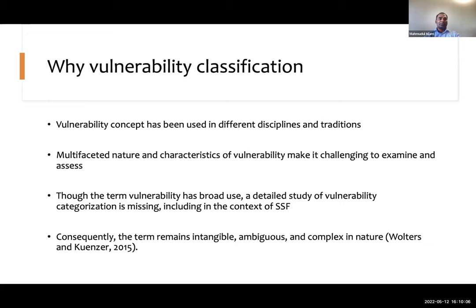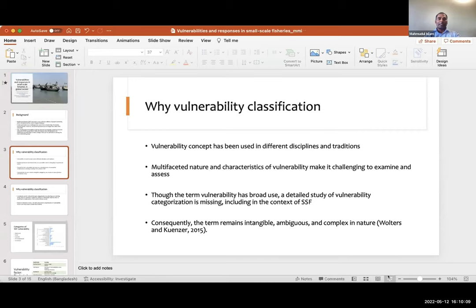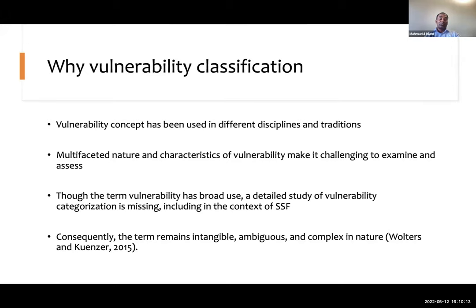Why do we need to classify vulnerability? Vulnerability is a concept used in different disciplines and traditions, making it complex. It is used in economics, building structures, and different disciplines. The factors are not all similar, but their main themes are more or less similar. This complexity makes it challenging to examine particular vulnerability cases in particular communities. Although the term is widely used, a detailed study of categorizing it is missing, particularly in small-scale fisheries, leaving the term intangible, ambiguous, and complex.